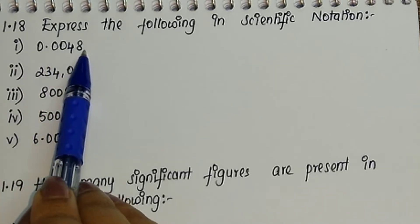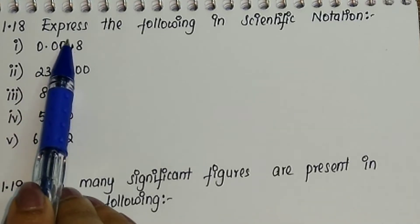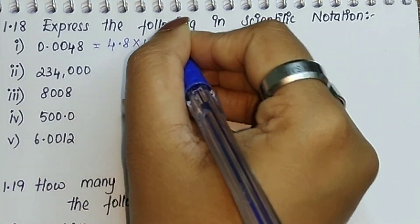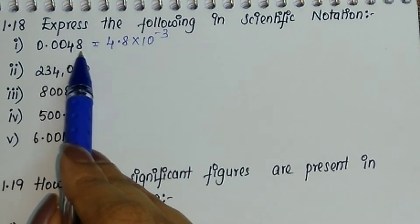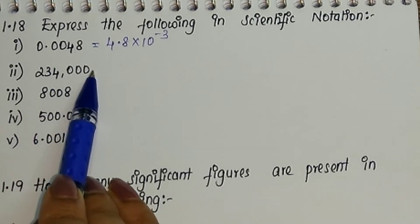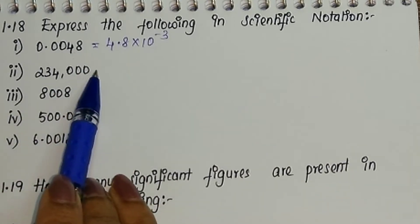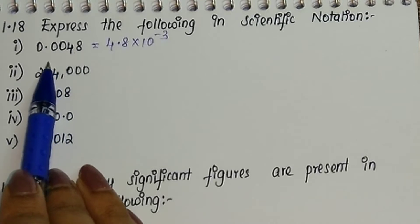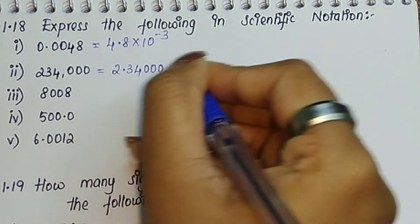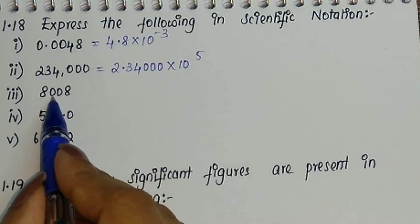The first number is 0.0048. We need to shift the decimal up to 4.8, so we move it 1, 2, 3 places — giving us 4.8 × 10⁻³. The next number has no decimal, so starting from the right we shift the decimal to get 2.34000 — moving it 1, 2, 3, 4, 5 places — giving us 2.34000 × 10⁵.